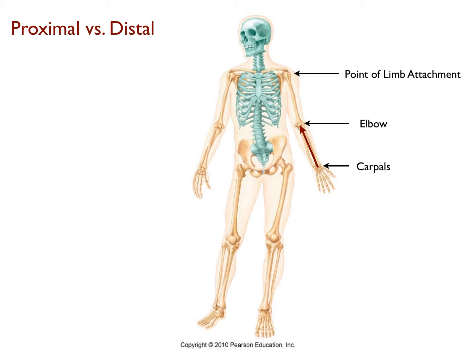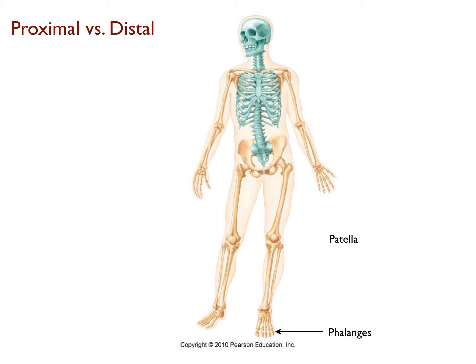Let's do one more example. Which term should we use if we want to know where the phalanges are in relation to the kneecap or patella? In this example, the arrow will point down, away from the point of limb attachment. Consequently, you should have said that the phalanges are distal to the patella.